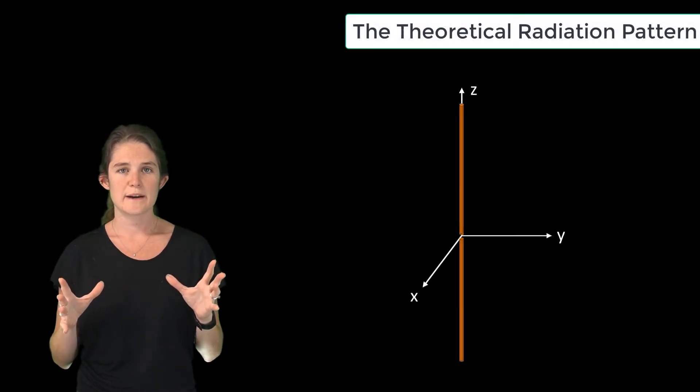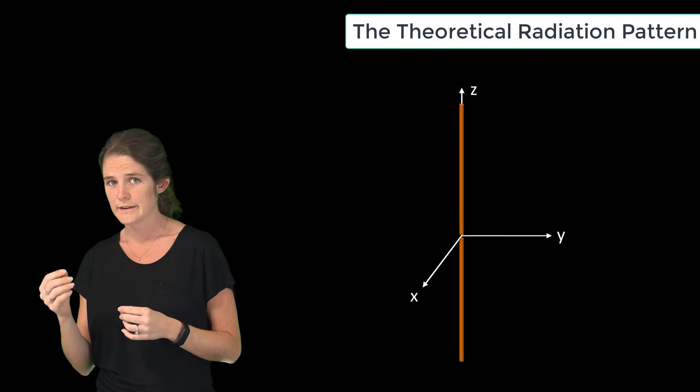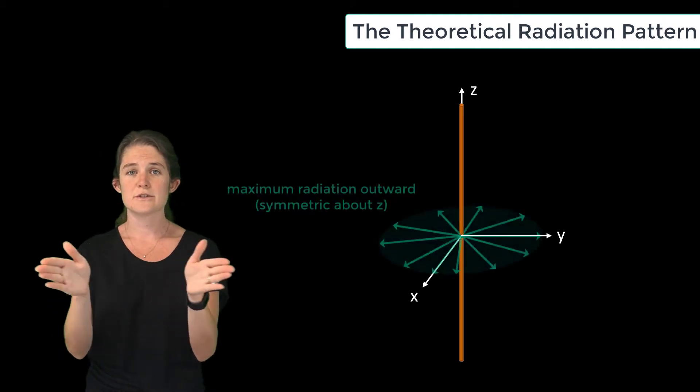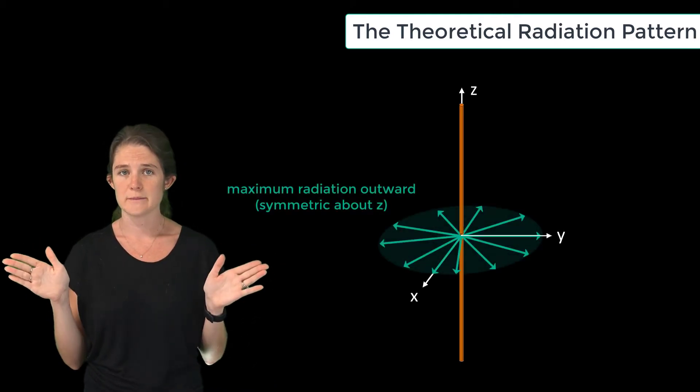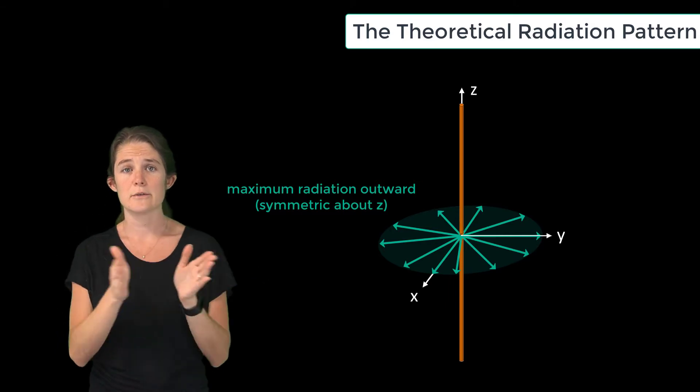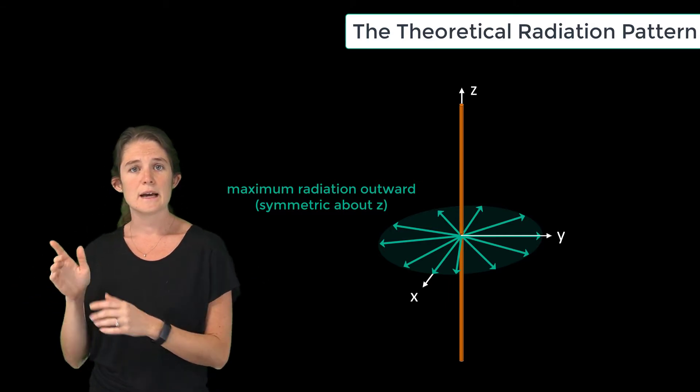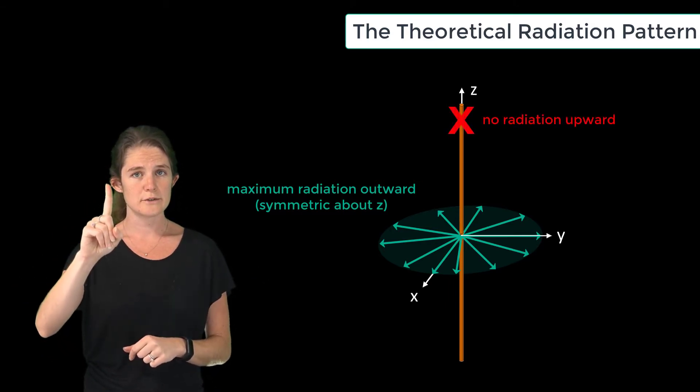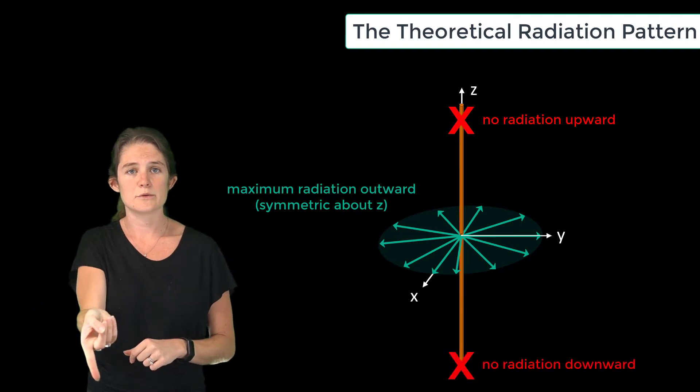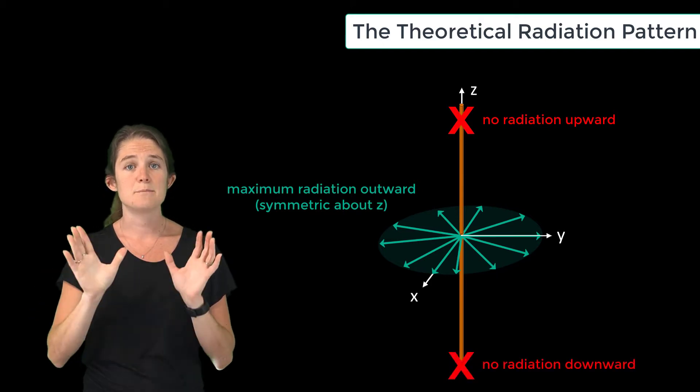The far-field radiation pattern of a half-wave dipole in theory has perfect rotational symmetry with respect to phi, so rotationally around the z-axis. It has nulls at theta equals zero degrees and at theta equals 180 degrees, and its maximum is in the plane where theta equals 90 degrees.